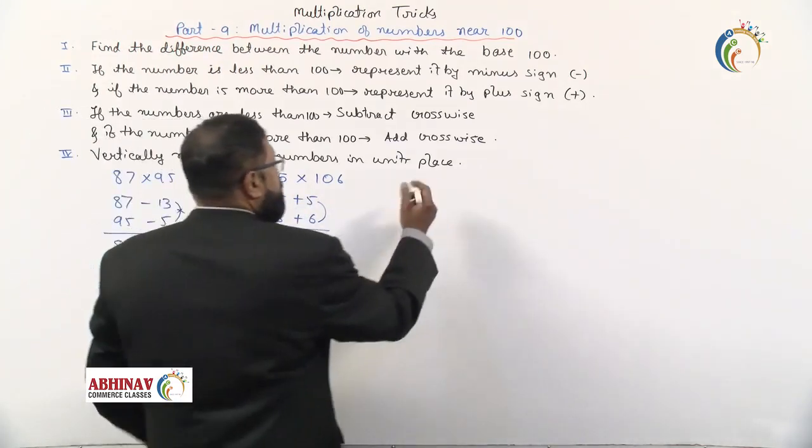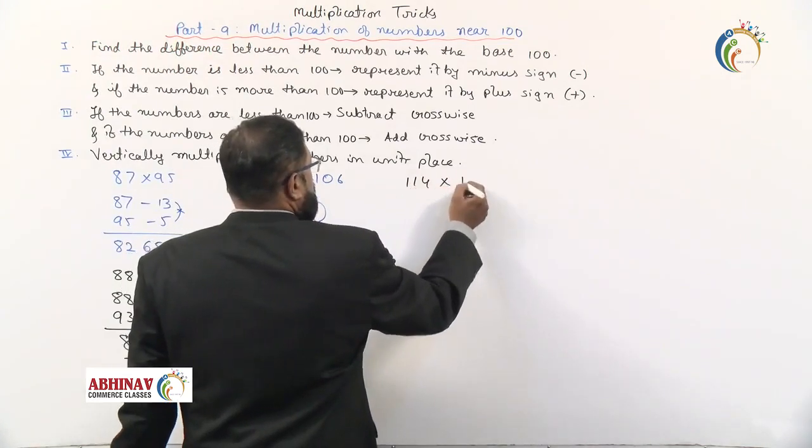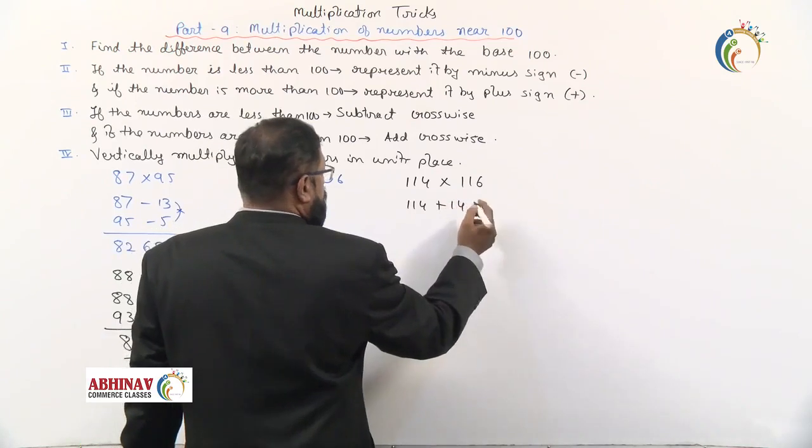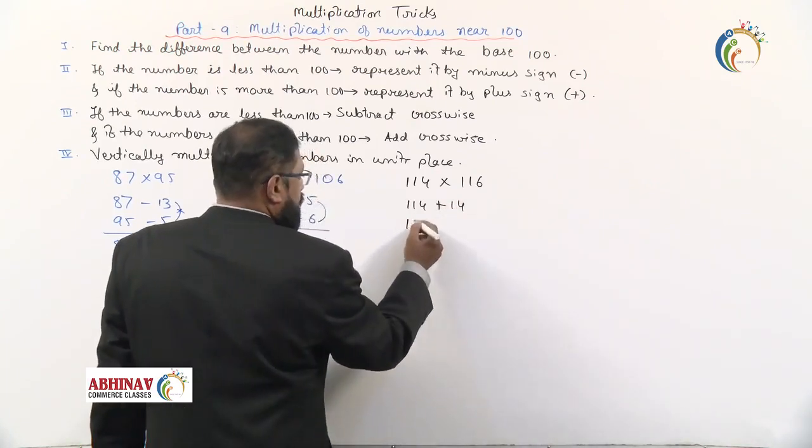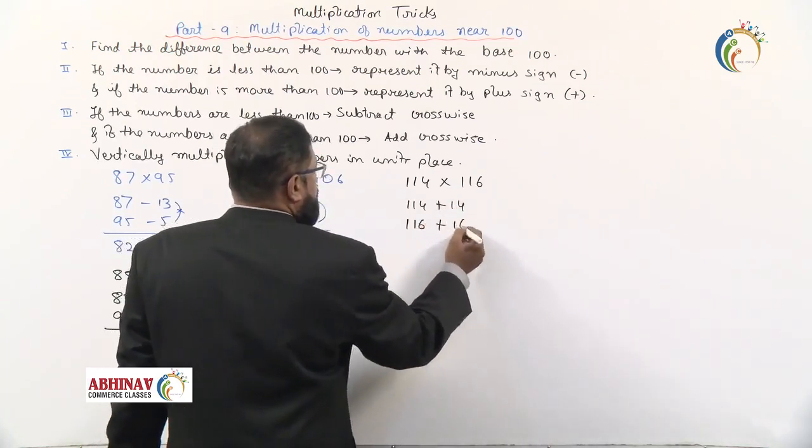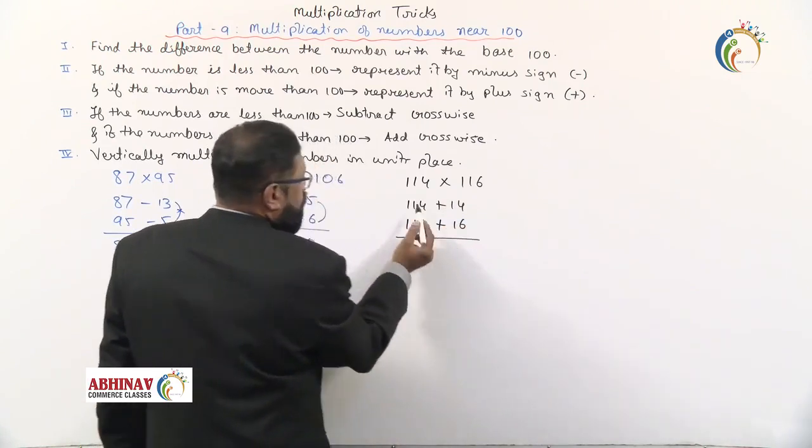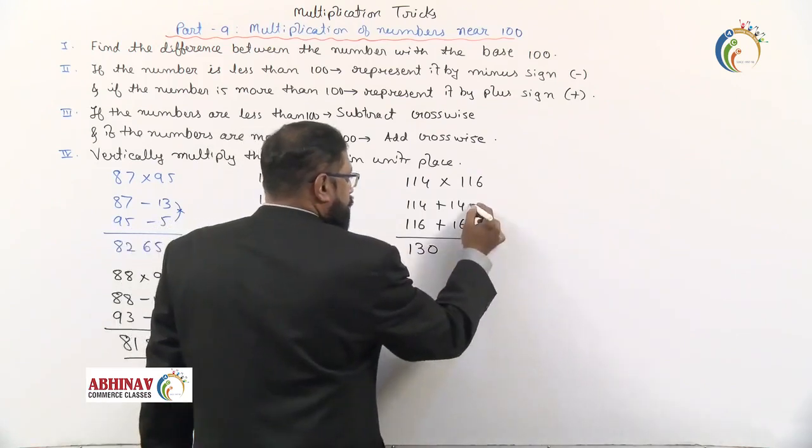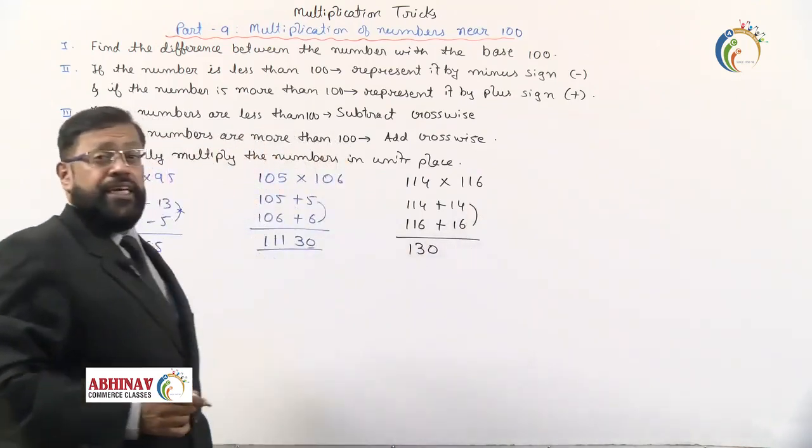Next: 114 times 116. This is 14 more and 16 more. When you cross add, you get 130. Now we have to multiply 16 times 14.